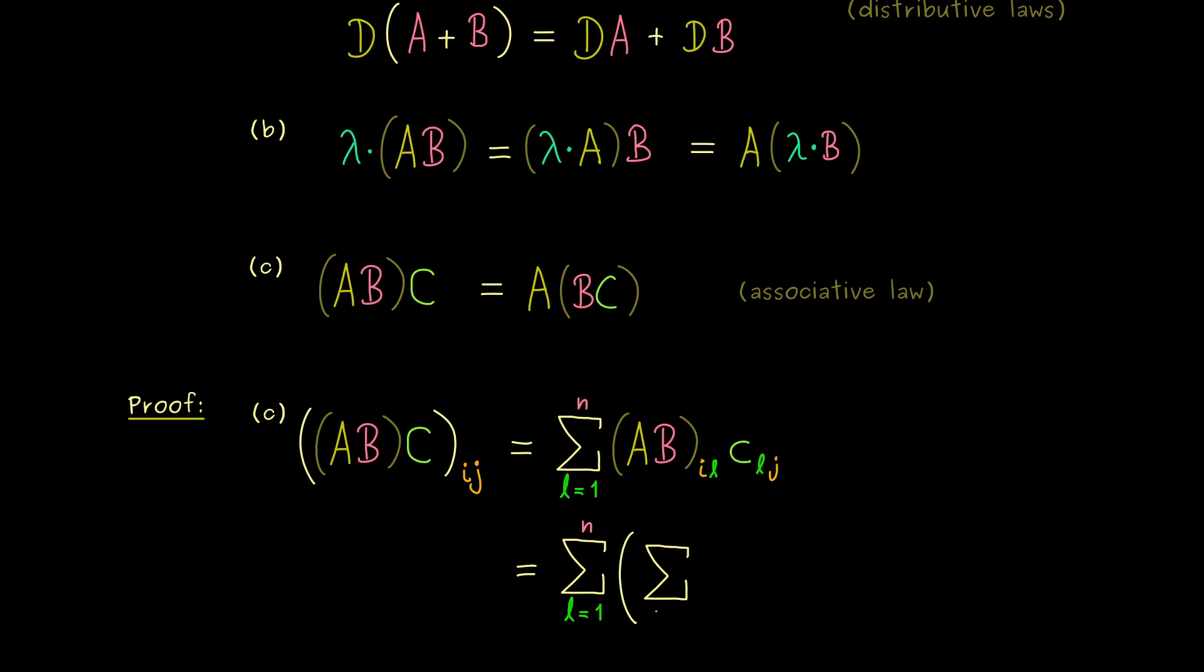However, for this sum we need a new index, so maybe to avoid confusion, let's simply call it Z. Speaking of confusion, of course, this end index here, the number of columns or rows, now could be different.